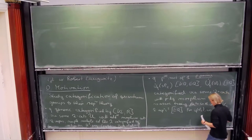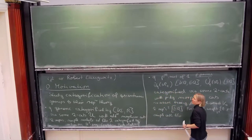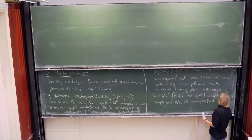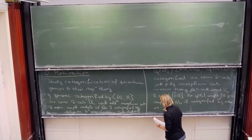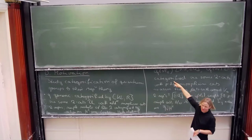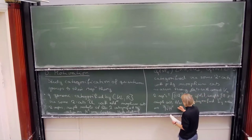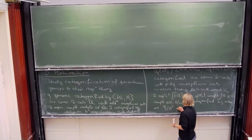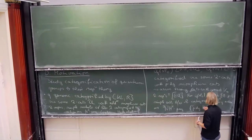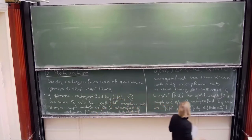For the small quantum group and weights zero up to p minus one, the simple with highest weight lambda is categorified by action on the PDG nil Hecke algebra. This Hecke algebra is just a nil Hecke algebra of SL2, and the differential means you additionally have this p-differential on it. This is the PDG nil Hecke algebra. The difference in the n was just because the other case was more general, whereas here this is only for SL2.